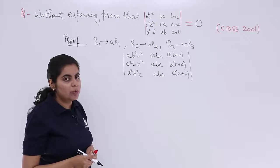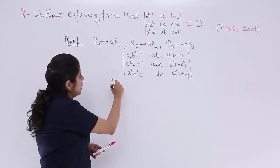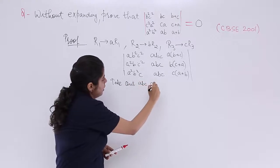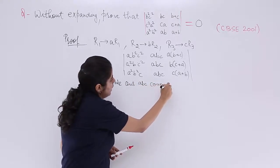So if you take out ABC common, common from where you can take out? Let's see. Common from the second column.